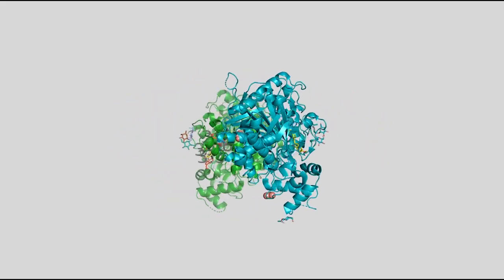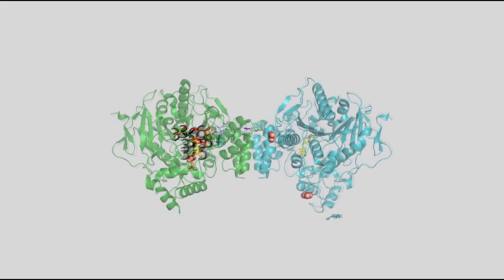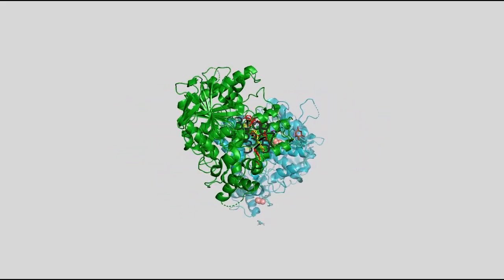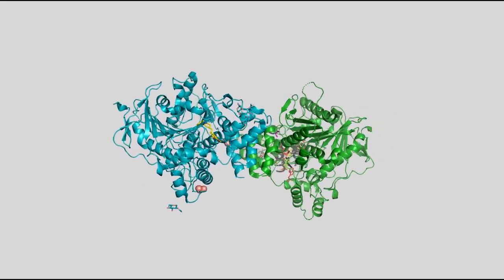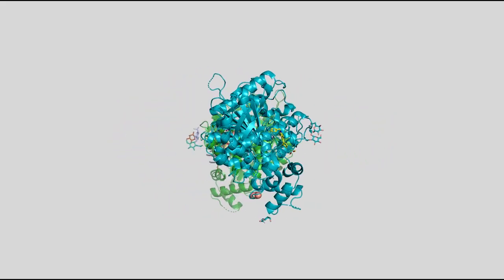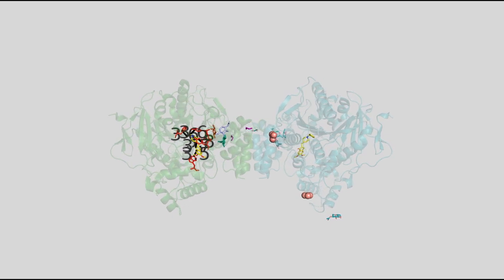Donepezil interacts with acetylcholinesterase by binding to the active site on each chain and inhibiting it by preventing the breakdown of acetylcholine, and therefore maintaining higher levels of this neurotransmitter.